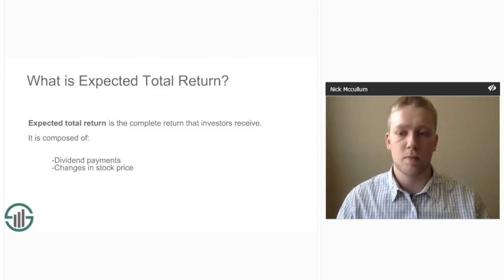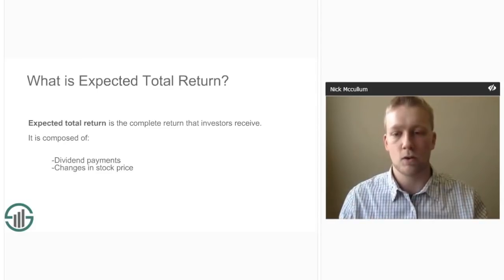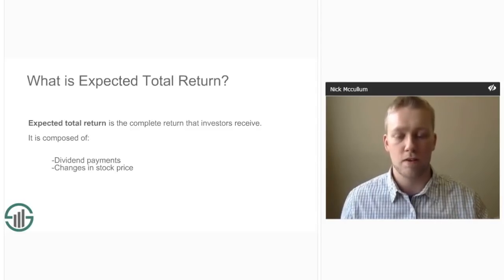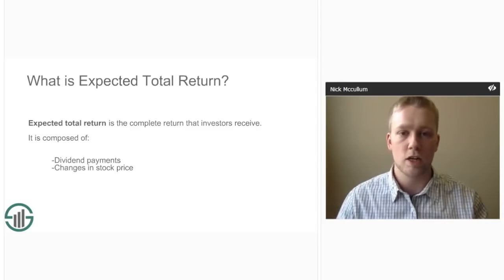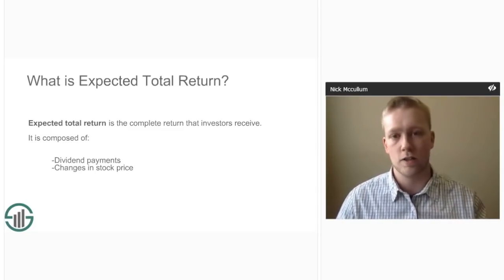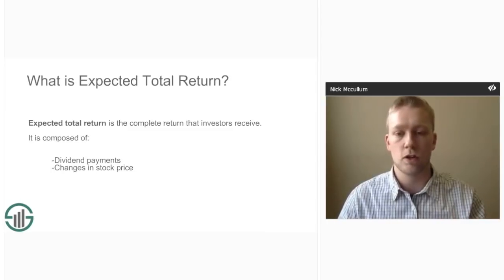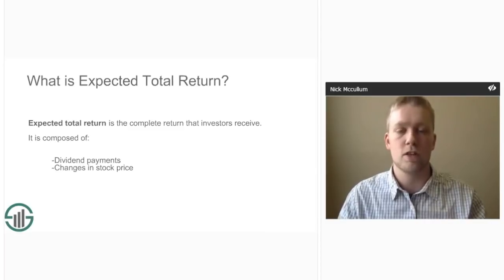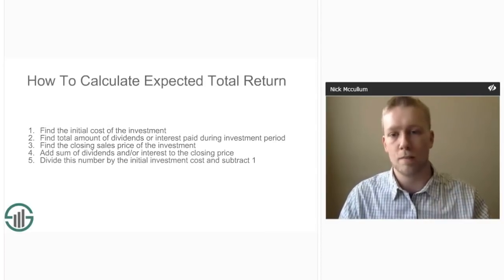The first thing we want to discuss is: what is expected total return? Expected total return is the complete return that investors receive throughout the lifetime of an investment. It's composed of dividend payments and changes to a company's stock price. For stocks, expected total returns are composed of changes in stock price and dividend payments.